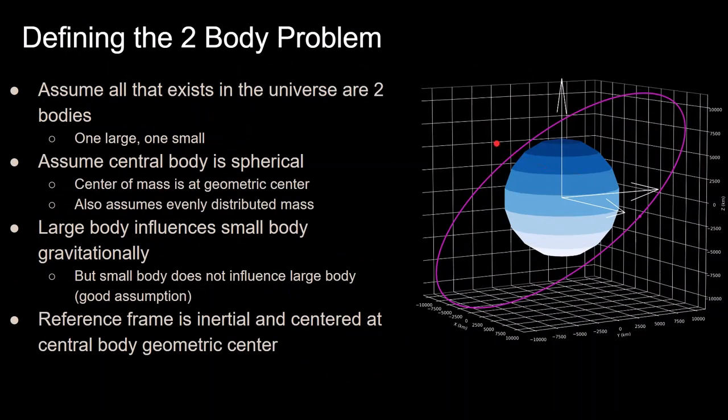So let's start by defining the underlying assumptions behind the two-body problem. First, we assume that all that exists in the universe are two bodies. One is very large, like the Earth, and another one is small, like a satellite orbiting the Earth. We also assume that the large body, Earth in this case, is spherical and its mass is evenly distributed.